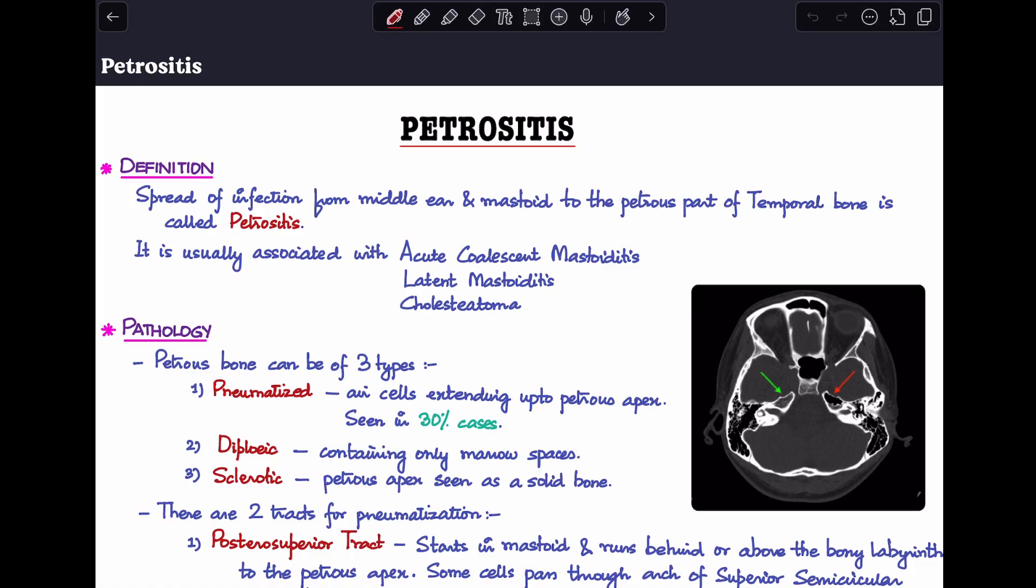Petrositis is a condition when there is a spread of infection from the middle ear mastoid to involve the petrous part of the temporal bone. It has been seen that petrositis is very commonly associated with acute coalescent mastoiditis, latent mastoiditis, and cholesteatoma. Now before we go into the disease, let's know a little bit about the anatomy, about the pneumatization of the petrous bone and how it gets involved in a case of mastoiditis or chronic otitis media.